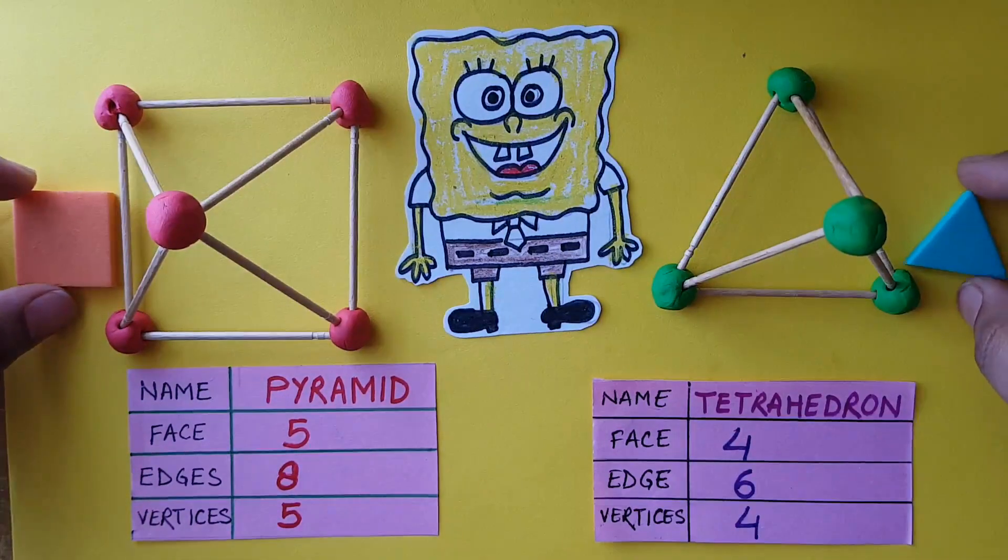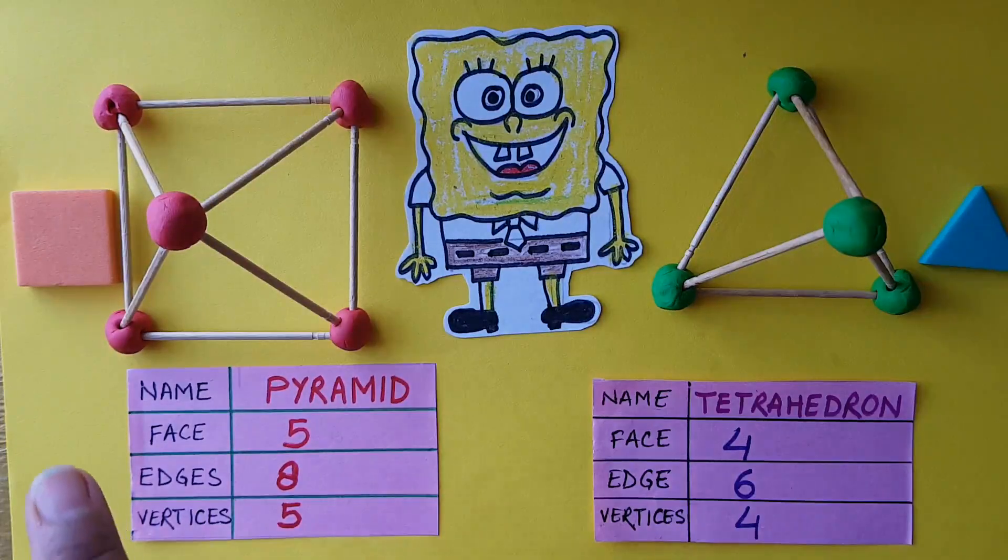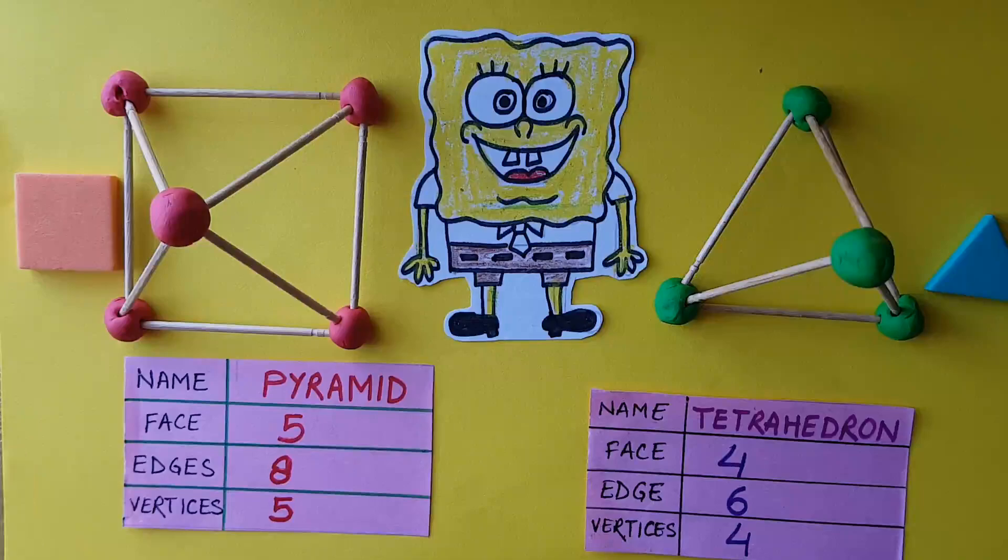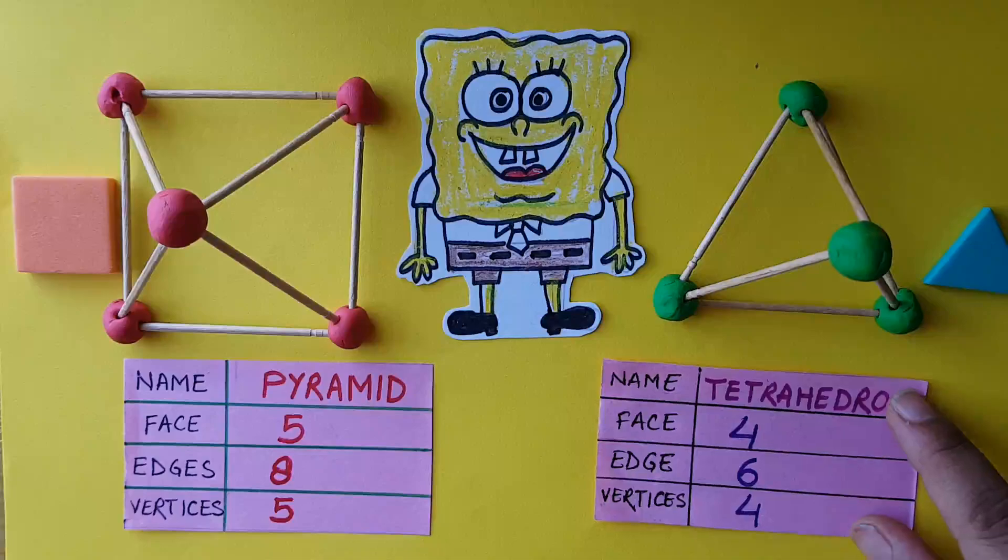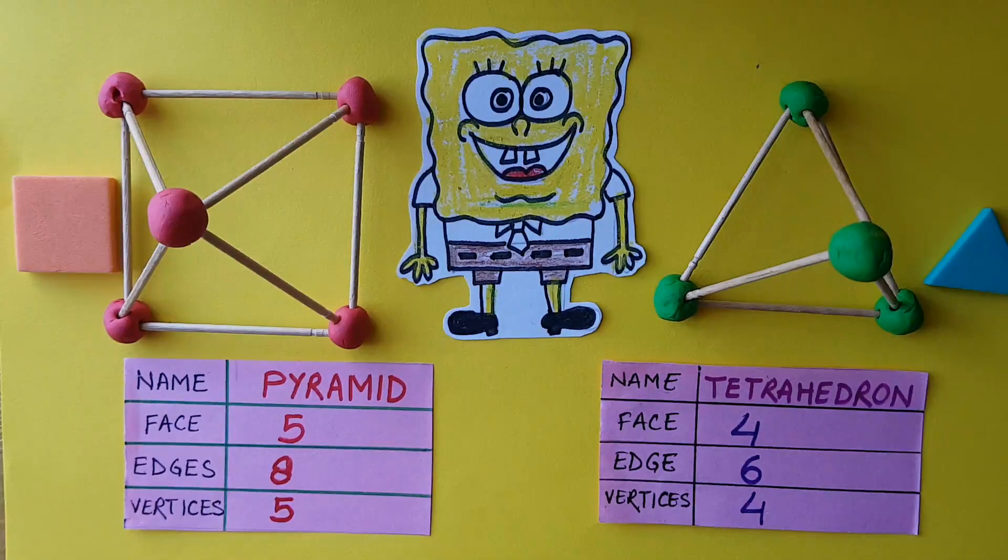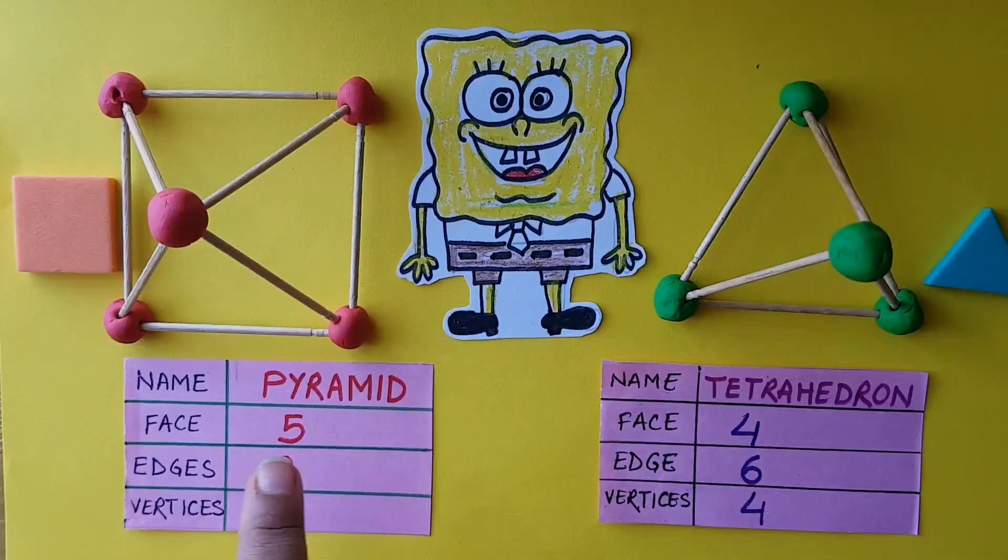The base is different. You can see, for easy understanding, the base of the pyramid is made with a square and the base of the tetrahedron is made with a triangle.